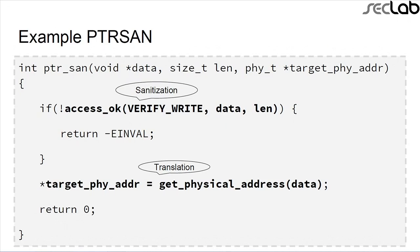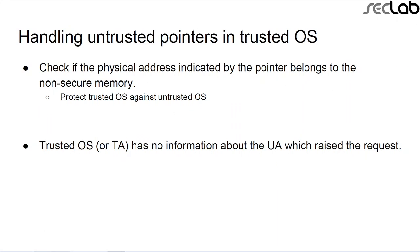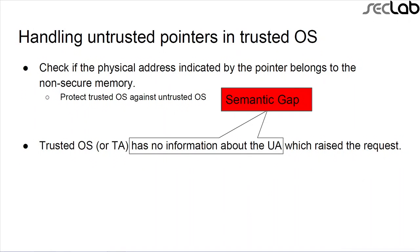Here is an example of simple PTRSAN. First there is a sanitization check, and then, if it passes, there is a translation to get the physical address. In the non-secure world, pointers are virtual addresses; in the trusted world, they become physical addresses. When the trusted OS receives these pointers, it verifies they belong to the untrusted OS to protect itself, then performs the request. Importantly, the trusted OS and TA have no idea which untrusted application actually raised the request — and this leads to a semantic gap, which is the boomerang flaw.